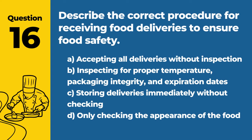Question 16. Describe the correct procedure for receiving food deliveries to ensure food safety. Answer: B. Inspecting for proper temperature, packaging integrity, and expiration dates. This ensures that only safe and high-quality foods enter the kitchen.